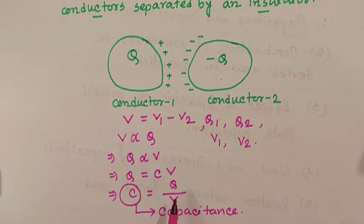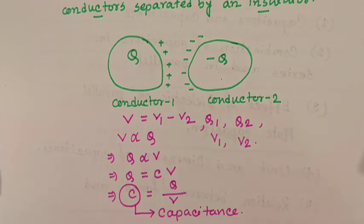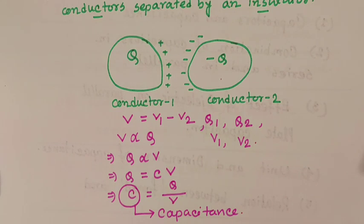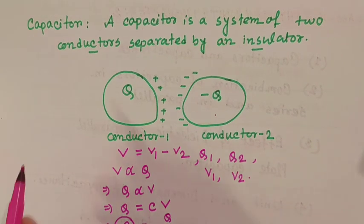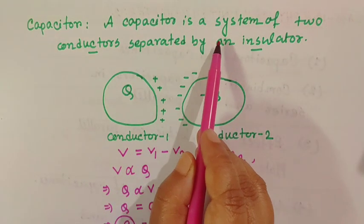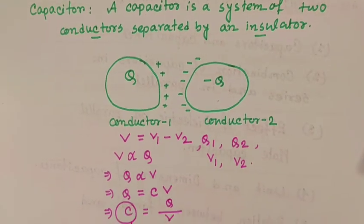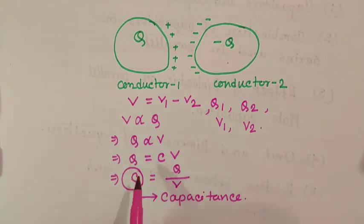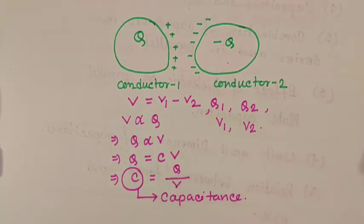C is independent of Q or V. The capacitance C depends only on the geometrical configuration — that means shape, size, and separation of the system of two conductors. So, a capacitor is a system of two conductors separated by an insulator. And the ratio Q by V, this constant C, is known as capacitance.